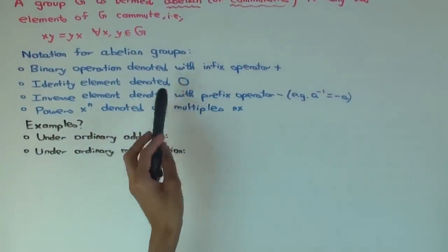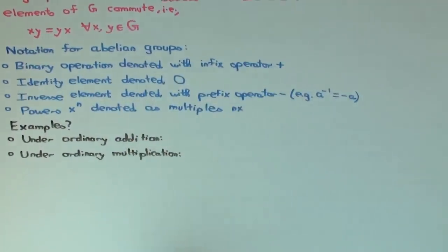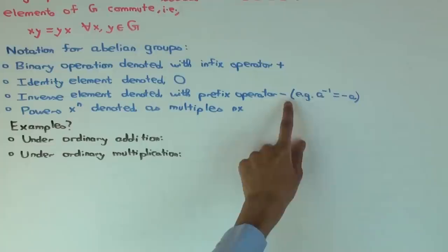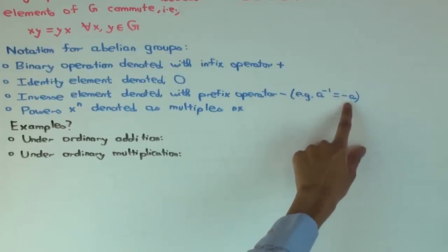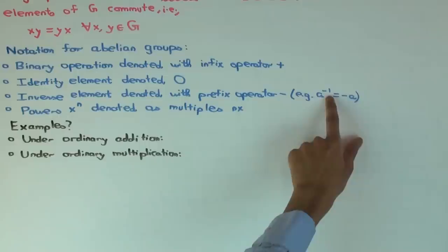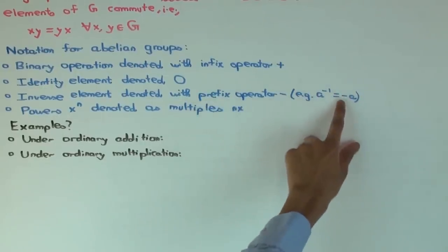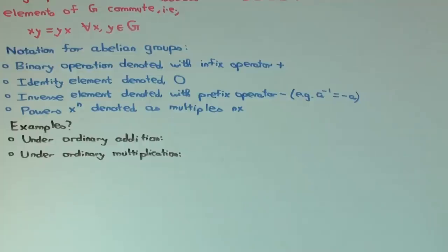But for abelian groups, we use 0 when we're using the additive notation. The inverse element is denoted with a prefix operator minus. What that means is that the inverse of a is denoted minus a instead of a inverse. The minus is put as a prefix on the left.